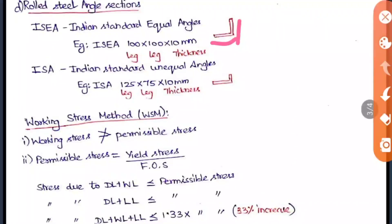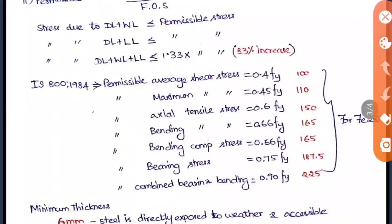Now we look at the working stress method. The safe working stress should always be less than the permissible stress for the structure to be safe. Permissible stress equals yield stress divided by factor of safety. For dead load and wind load, stress should be less than permissible stress. For dead load and live load, the same applies. But for dead load plus wind load plus live load combined, the stress should be less than 1.33 times the permissible stress — a 33% increase for safety when all three loads act together.